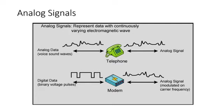To achieve longer distances, the analog transmission system includes amplifiers that boost the energy in the signal. Unfortunately, the amplifier also boosts the noise components. With amplifiers cascaded to achieve long distances, the signal becomes more and more distorted. For analog data such as voice, quite a bit of distortion can be tolerated and the data remain intelligible. However, for digital data, cascaded amplifiers will introduce errors.